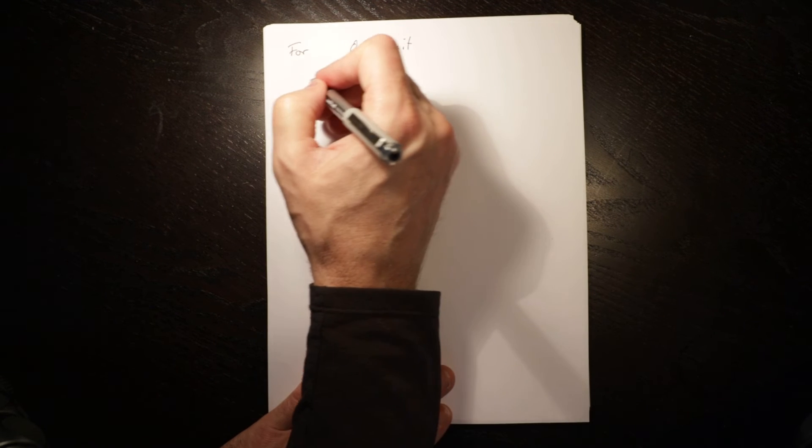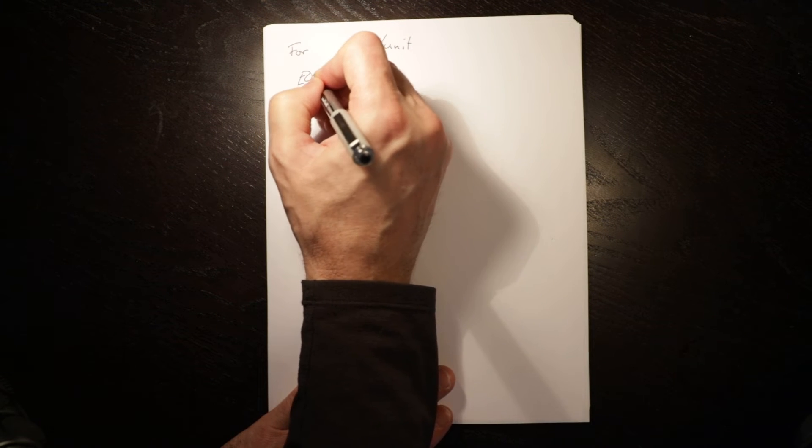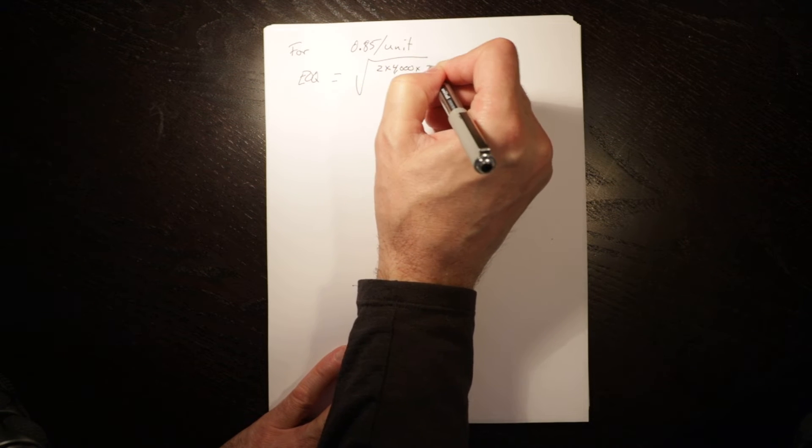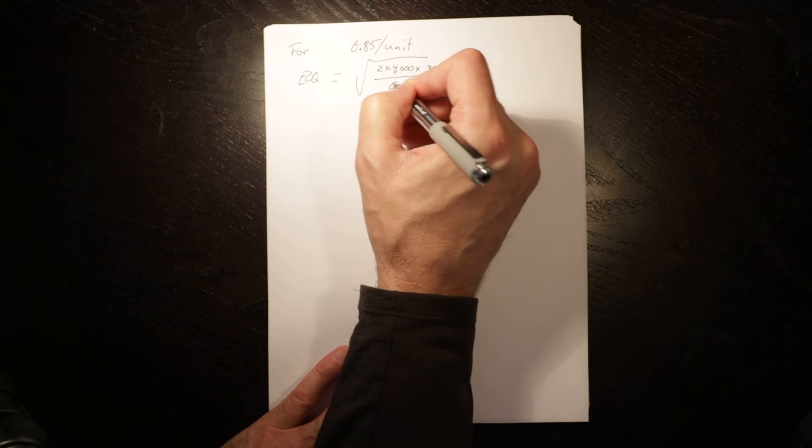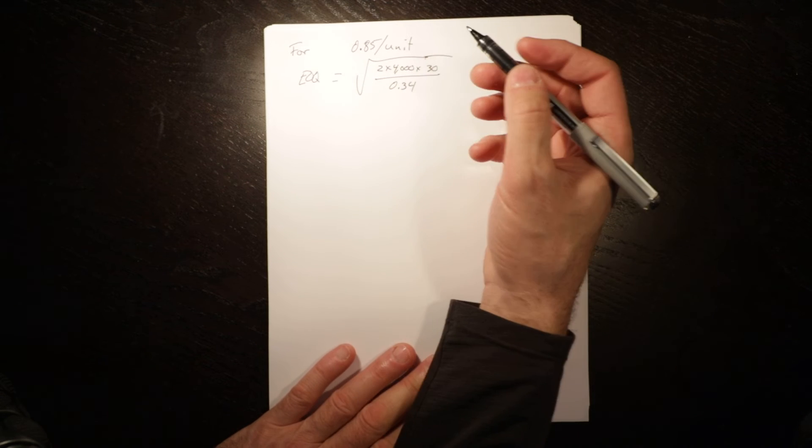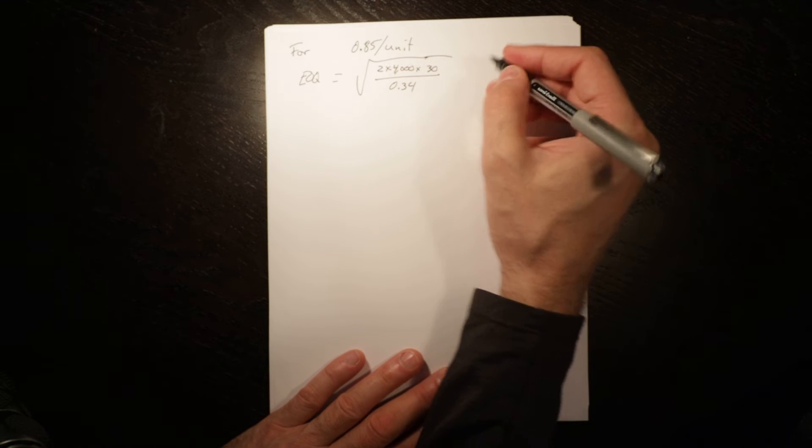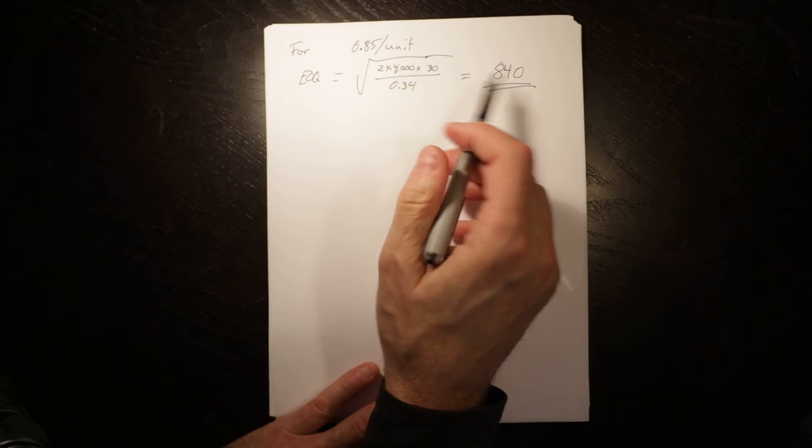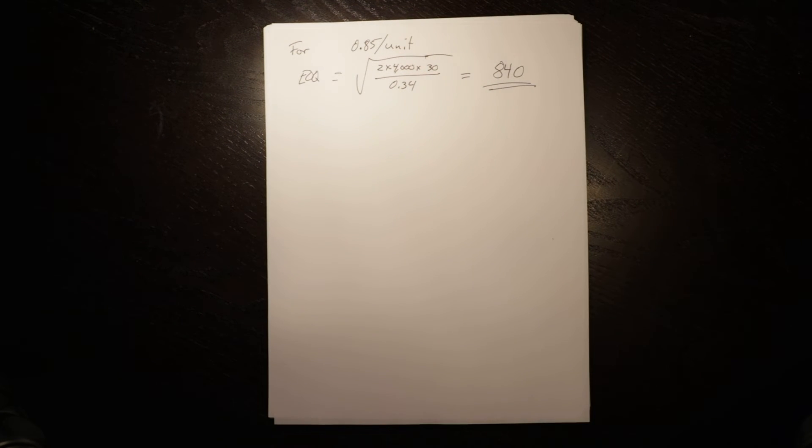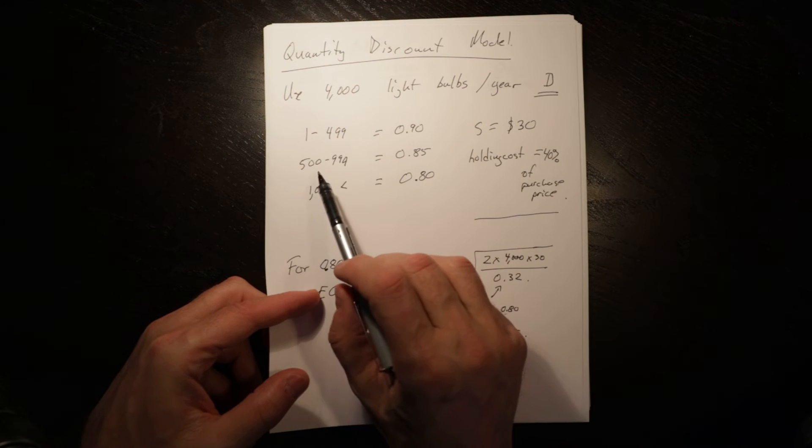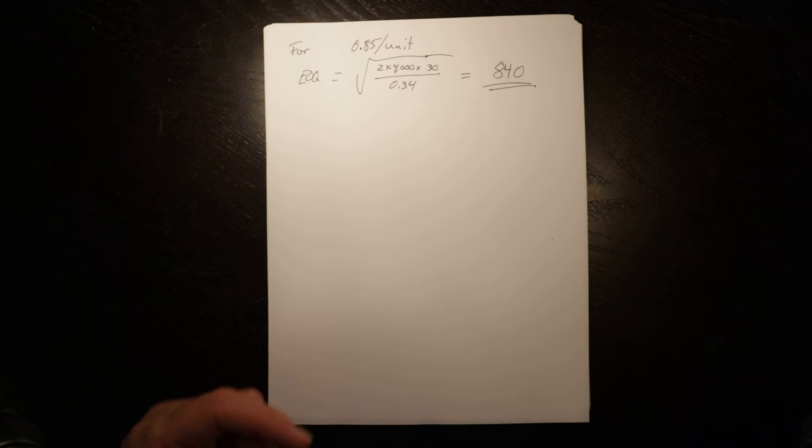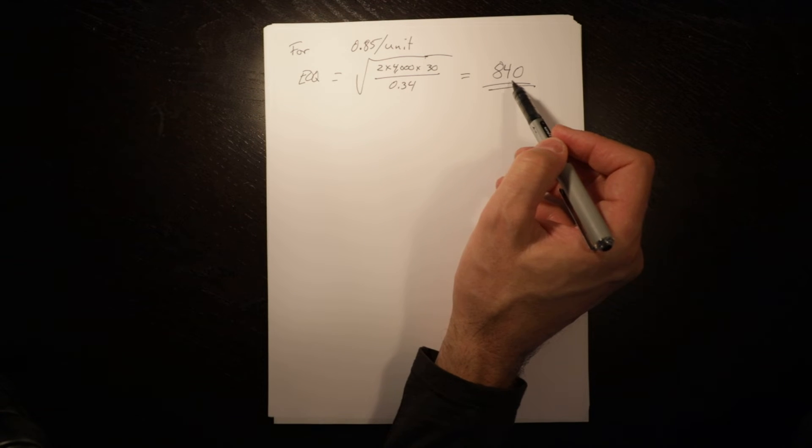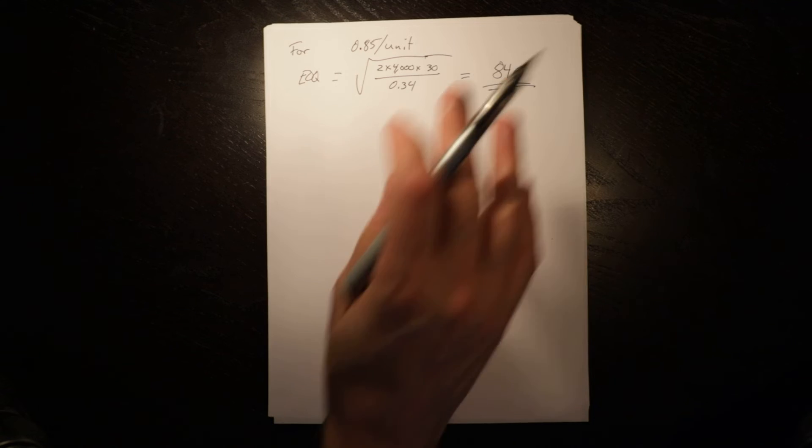For 0.85 per unit, the EOQ equals the square root of 2 times 4,000 times 30 divided by 0.34—our holding cost has gone up because our acquisition cost has gone up. This equals 840 units. To get the 85 cent deal, we have to order between 500 and 999, and the optimal order quantity at that price is within that range, so we're happy.